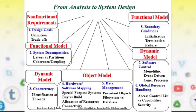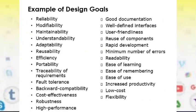Under the functional model, it maps to boundary conditions. Examples of design goals include: reliability — good documentation, modifiability, well-defined interfaces, maintainability, user-friendliness, understandability, reuse of components, adaptability, rapid development, reusability, minimum number of errors, efficiency, readability, portability, ease of learning, ease of remembering, fault tolerance, ease of use, backward compatibility, increased productivity, cost-effectiveness, low cost, robustness, flexibility, and high performance.